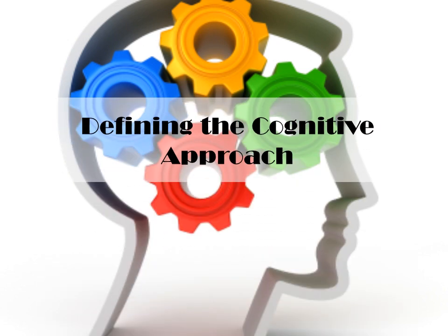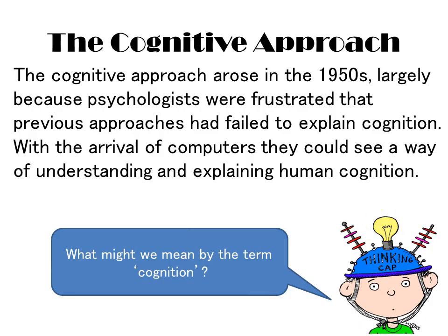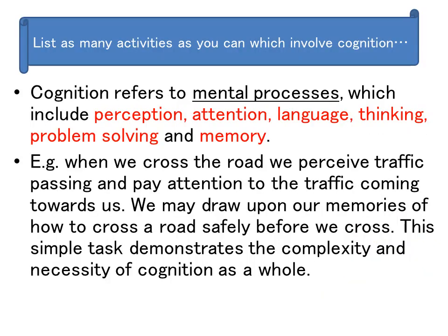This is lesson one in the cognitive approach, defining the cognitive approach. The cognitive approach rose in the 1950s, largely because psychologists were frustrated that previous approaches had failed to explain cognition. The arrival of computers provided a way of understanding and explaining human cognition.